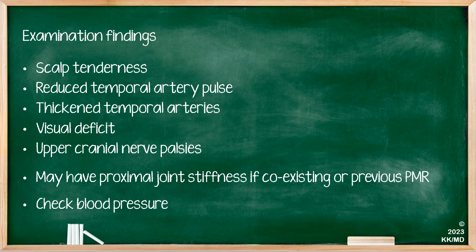On examination of a patient with suspected GCA, you will frequently find scalp tenderness, reduced temporal artery pulse, and thickened temporal arteries. It is also important to examine for visual field defects and upper cranial nerve palsies. As GCA can present as a spectrum with PMR, it would be prudent to examine for proximal joint stiffness. And considering this is a type of large vessel vasculitis, checking the patient's blood pressure is also important.